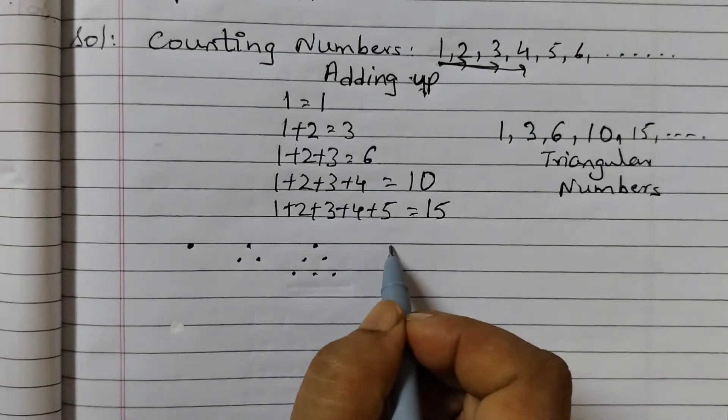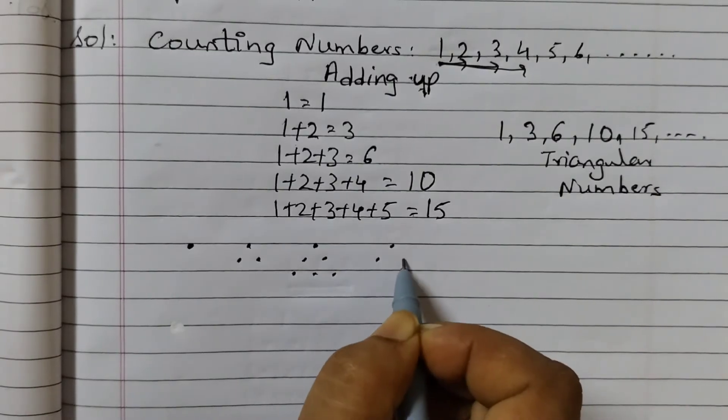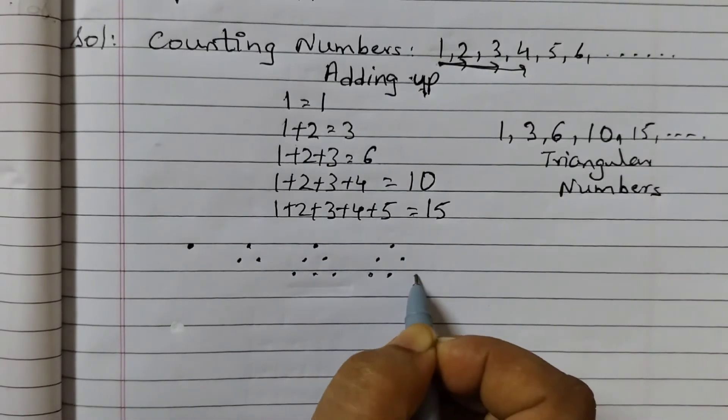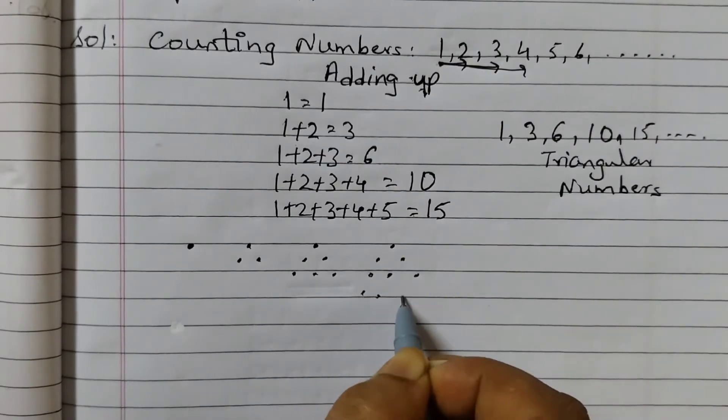1 plus 2 plus 3 plus 4: 1, 2 dots, 3 dots, 4 dots.